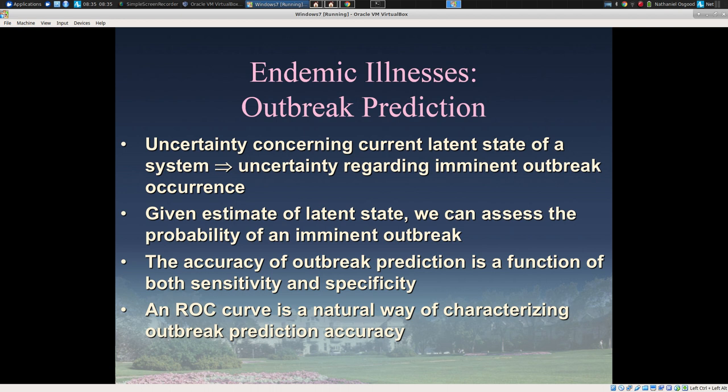Another use of these techniques is to predict what's likely to happen in the next month — a classification task. This hinges on our understanding of the latent state: if we're very uncertain about how many susceptibles there are, it's hard to estimate outbreak likelihood. Conversely, if we know with great confidence that a very large fraction of the population is recovered, it shapes our understanding significantly. If we can estimate latent state, we can do outbreak prediction quite well.